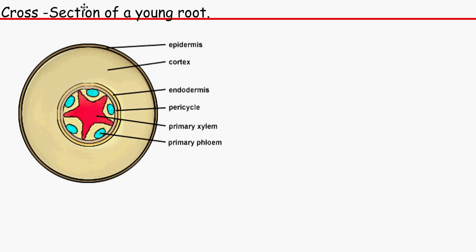This is a cross section of a young root. In your exam you would need to write a young root, not an old root or an ancient root, but a young root. We've got the epidermis, which is basically a layer of cells which protects the underlying cells underneath it. Then we've got the cortex.